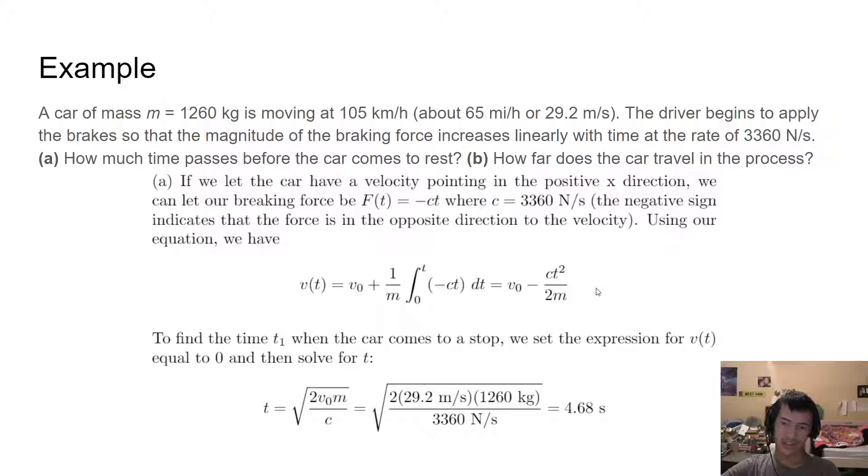Now, to find the time when the car comes to a stop, we'll call it t1, we're going to need to set the expression for v of t equal to 0, and then solve for t. Doing that, we get this equation t equals the square root of 2v naught m divided by c. Hopefully at this point, you've done enough algebra to be able to do that on your own. Then we just plug in our values, making sure that we use that 29.2 meters per second, since newtons is given in kilogram meters per second, and we also have newtons per second on the bottom. We want everything to cancel out nicely. Plugging our stuff in, we get 4.68 seconds.